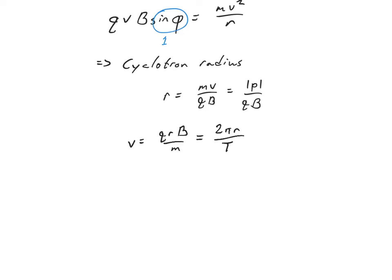So if I just solve this expression for the period t, I'll find that the period of orbit is going to be 2 pi m over qb. Interestingly, this is independent of the radius.